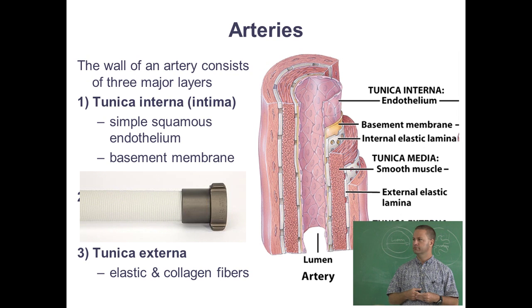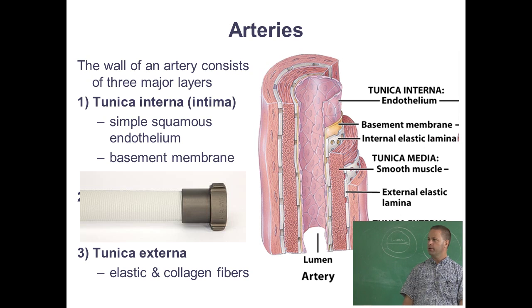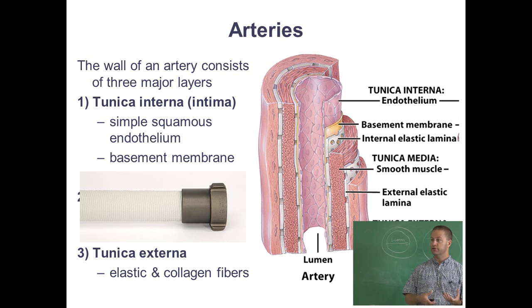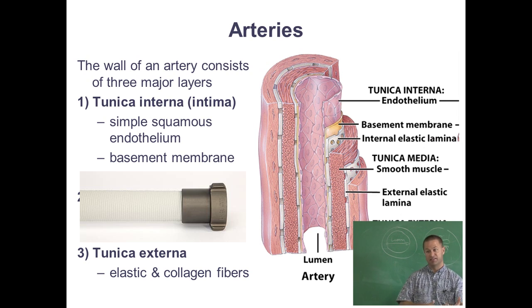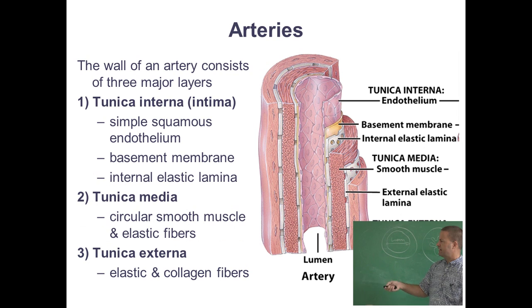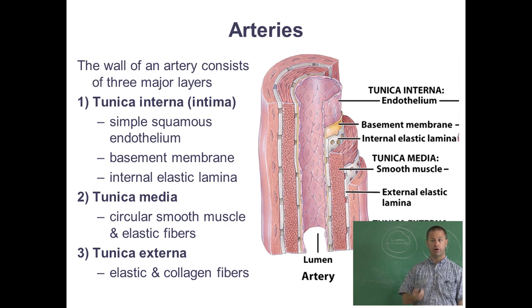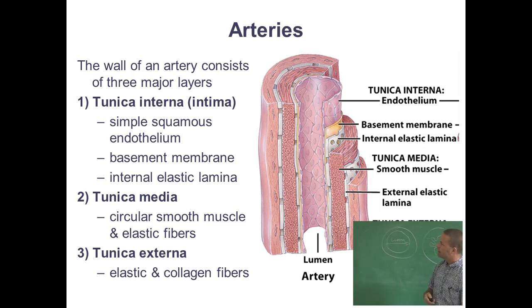The collagen fibers of the tunica externa are very important in arteries because of their high pressure. Think about a fire hose: it has canvas on the outside to protect the rubber inside from bursting under high pressure. In the same way, the collagen fibers are a hard case surrounding the artery that prevents it from over-expanding and rupturing. Sometimes arteries do rupture — we see this more often in people than dogs — that's called an aneurysm, which can cause a stroke.